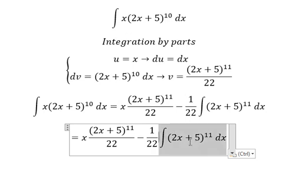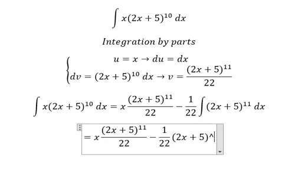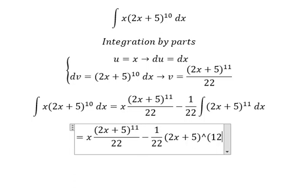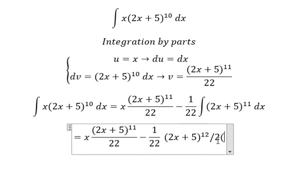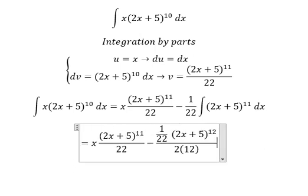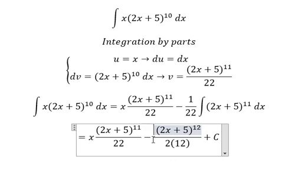The integration of this, we have (2x+5) to the power of 12, divided by 2 multiplied by 12. We put the constant C here. Now we need to simplify.